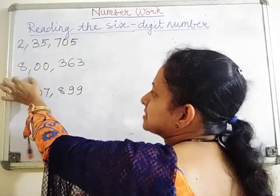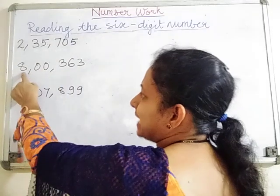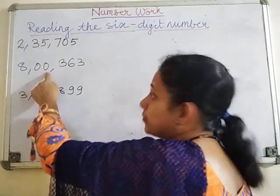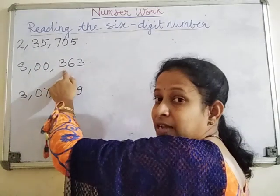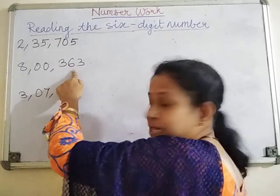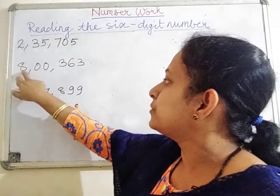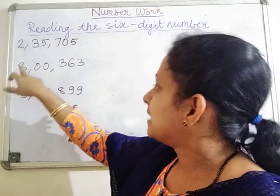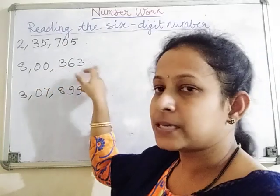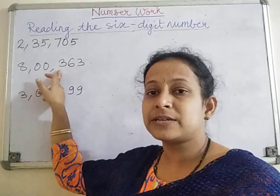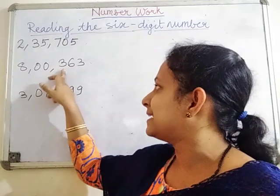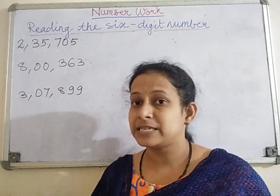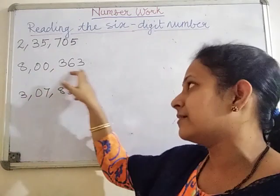Now the second number - in the lakhs place there is eight. In the ten thousands place there is zero. In the thousands place there is zero. In hundreds place there is three hundred, in tens place there is sixty, and three in units. So you will not read it as eight lakh three thousand. You read it as eight lakh, three hundred and sixty-three, because in ten thousands and thousands places there are zeros.